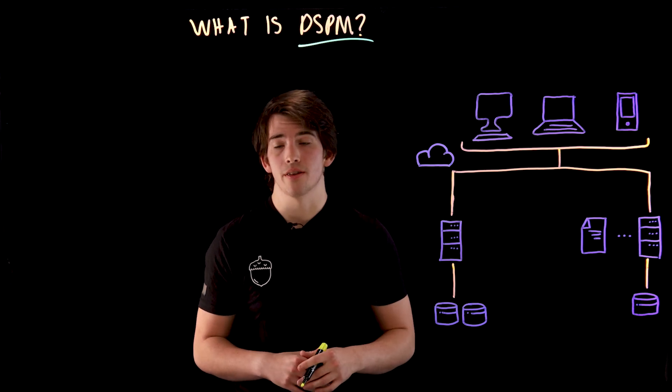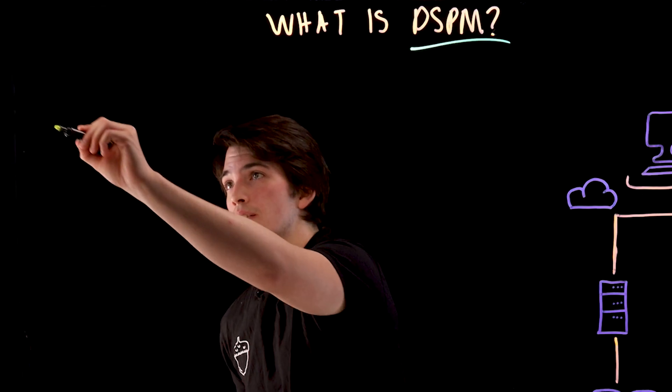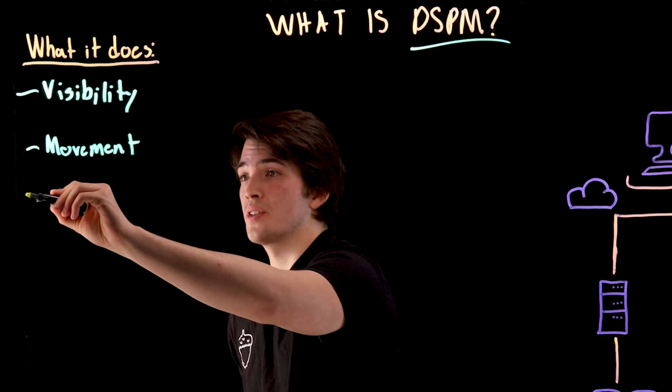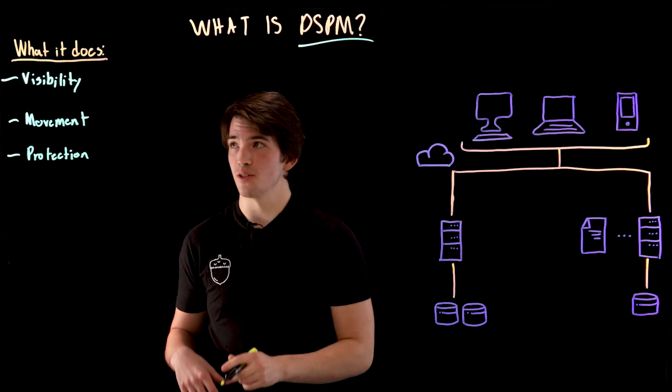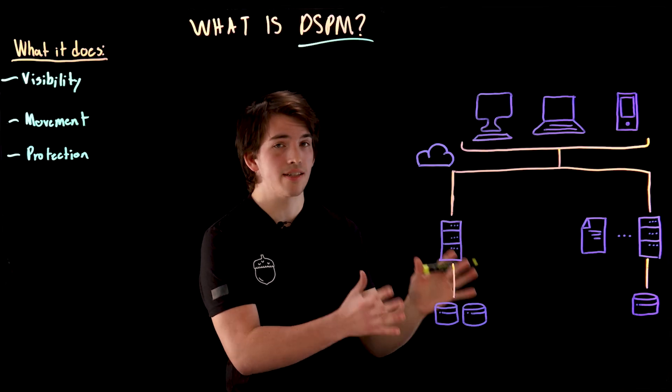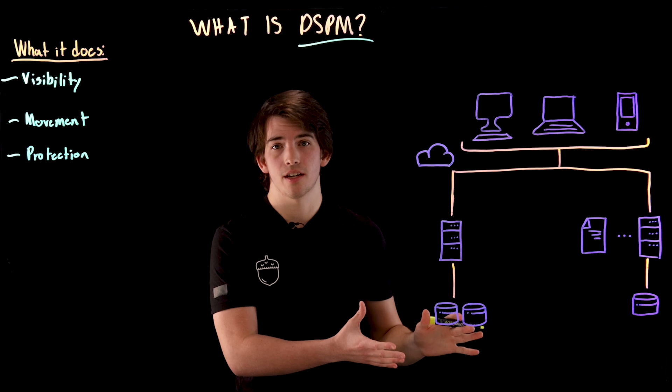It does this with three things in mind: visibility, movement, and protection. And to explain these things, I'll use this example topology diagram.